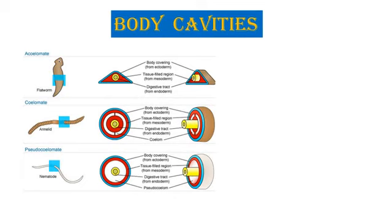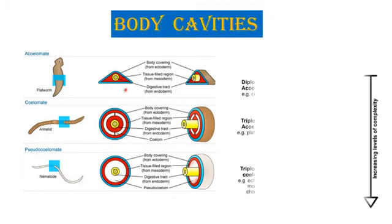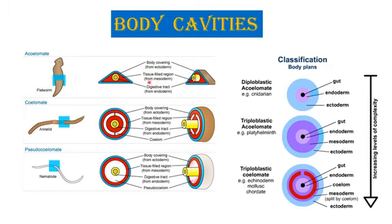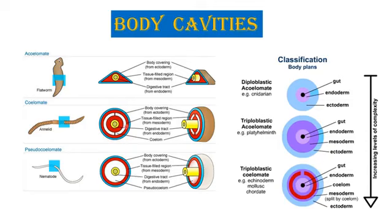The presence of body cavities or coelom is important in classifying animals. Animals develop from ectoderm, endoderm, and mesodermal germinal layers. The body cavity exists between the outer body covering and the inner digestive tract. If such a cavity is absent, those organisms are called acoelomates — they will have a rigid body with no free movement of internal organs. If a true coelom is present, lined on both sides by mesodermal layers, such organisms are called coelomate animals.